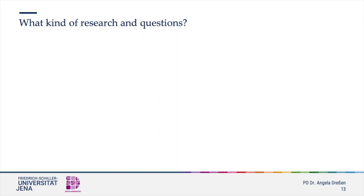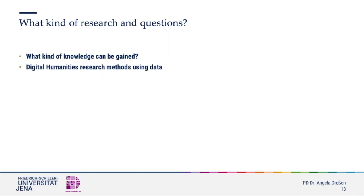What kind of knowledge can be gained? There is no easy answer to this question. In the end, the answer falls back on what you can do with the digital humanities. Dealing with art historical data is part of the digital humanities research method. That means that using research methods that rely on your computer or computational methods, you are able to do a different kind of research than through traditional methods.